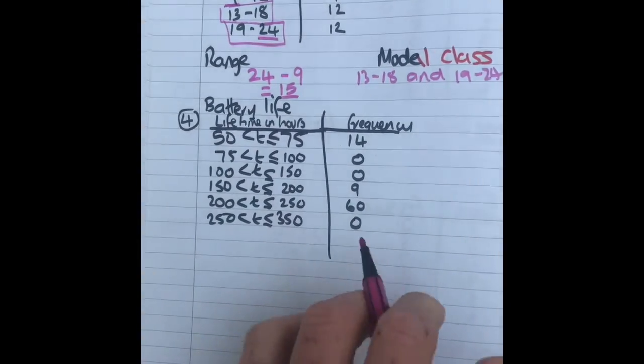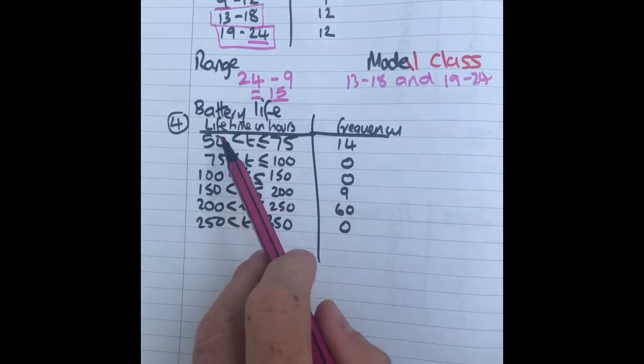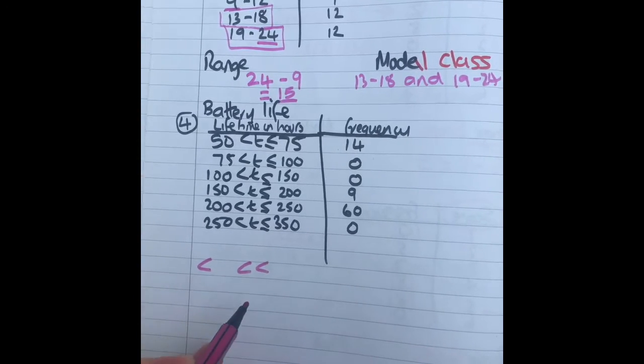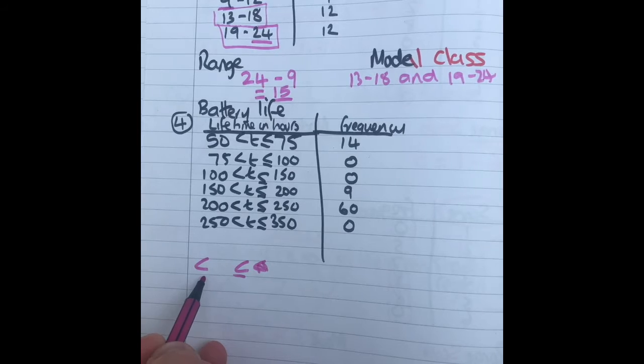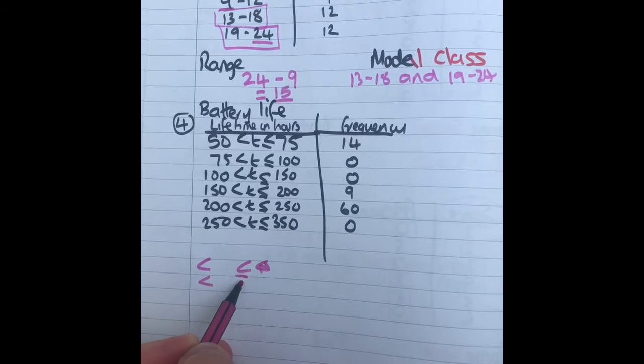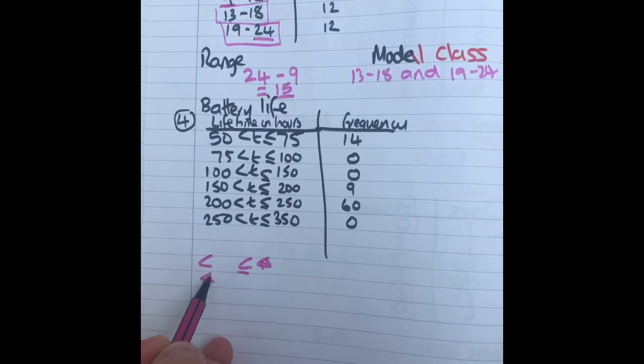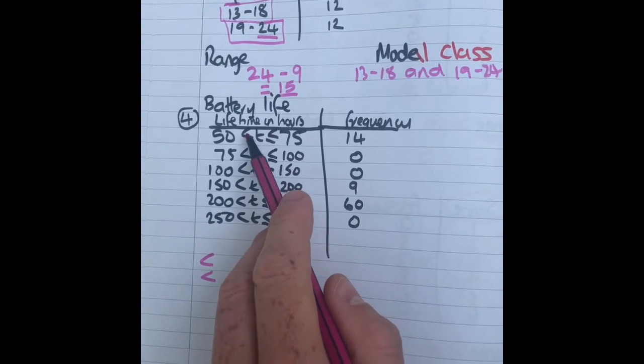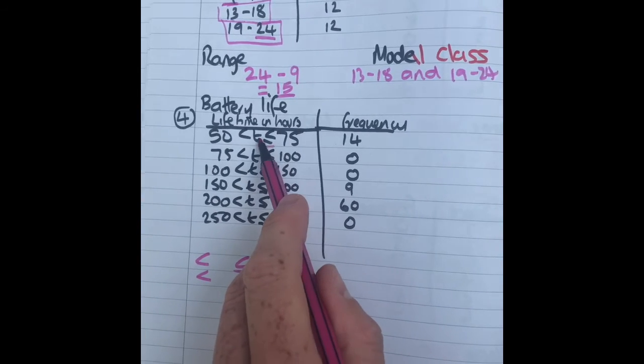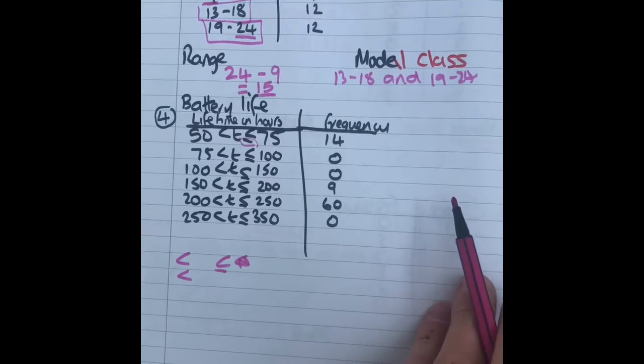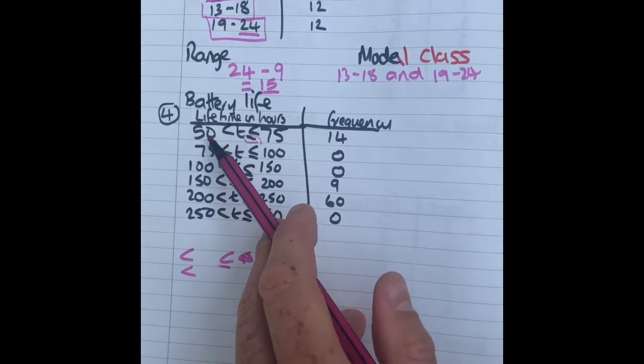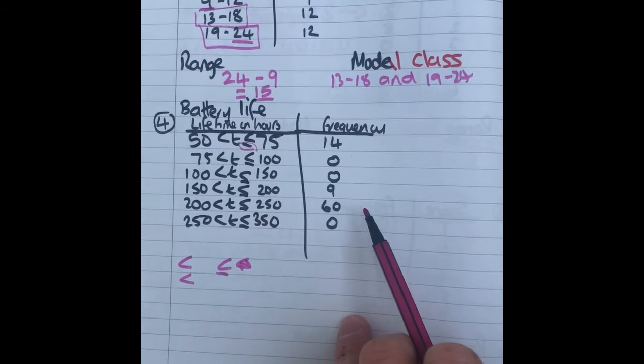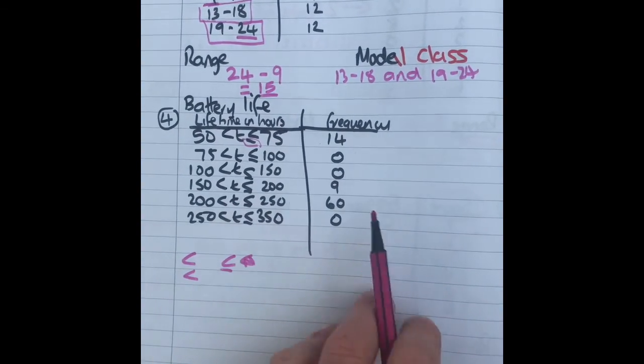The last question. Again this is grouped data but looks different. So remember these symbols mean inequalities. The four that you could have, you'll see two on these diagrams because you'll see that one and then depending which place you'd put the equal sign, it could be either there or there. This means there's 14 between 50 and 75, there's 60 between 200 and 250 hours.